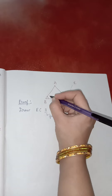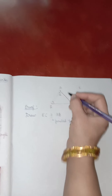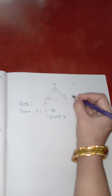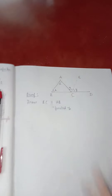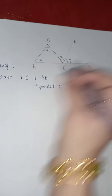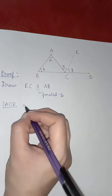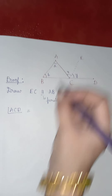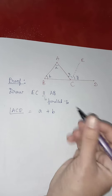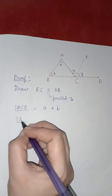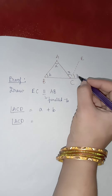Mark the angles: let angle BAC be A and angle ABC be B. Label the part of angle ACD between AC and CE as X, and the part between CE and CD as Y. So angle ACD equals X plus Y. This is from the figure.